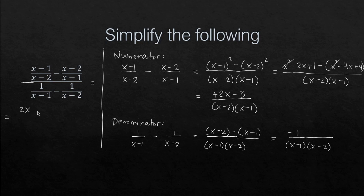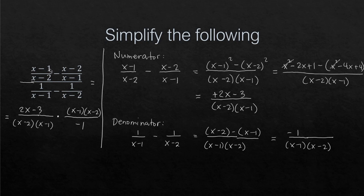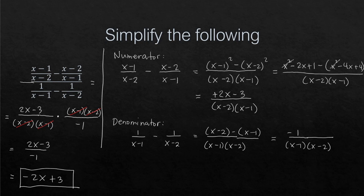Now we perform the division. We have (2x - 3) over (x-2)(x-1), divided by -1 over (x-1)(x-2). Converting to multiplication, we multiply by the reciprocal: (x-1)(x-2) over -1. The common factors (x-2) and (x-1) all cancel out. What remains is (2x - 3) divided by -1, which gives us negative 2x + 3. So our answer is -2x + 3.